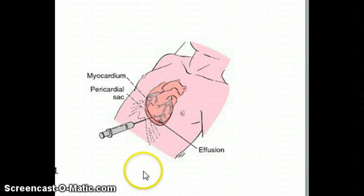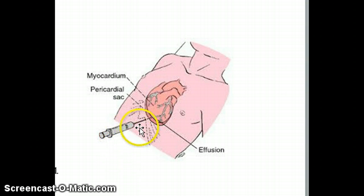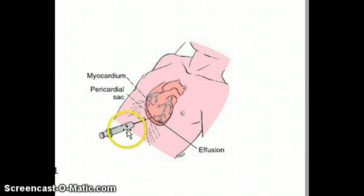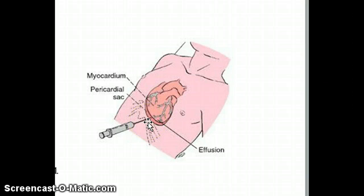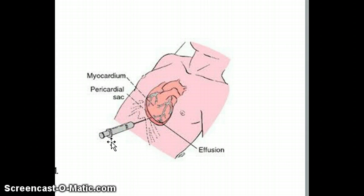This picture demonstrates the pericardiocentesis procedure, and basically it's as simple as this: apply some local anesthetic at the xiphoid tip of the sternum, stick a large needle in, pull back and aspirate — and that's pretty much it.